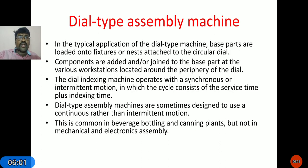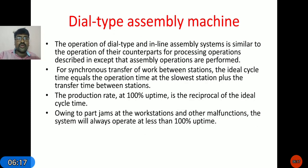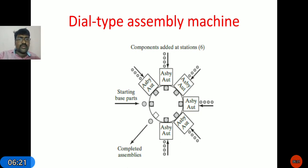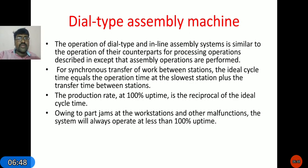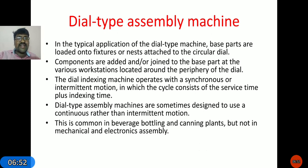Coming to the dial type assembly machine: base parts are loaded onto fixtures attached to a circular component. Components are added or joined to the base parts at various workstations located around the periphery of the dial. It is a circular flowline — the parts rotate clockwise through the workstations. In six workstations the assembly process is completed, and finally the work part is taken out.